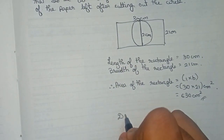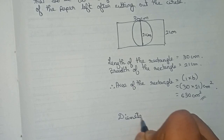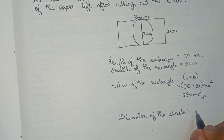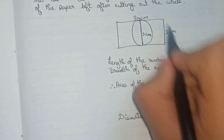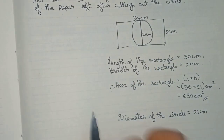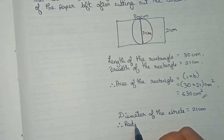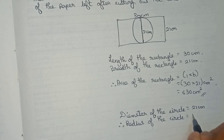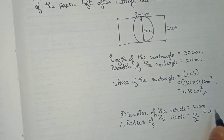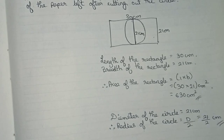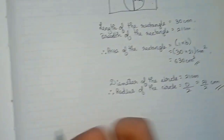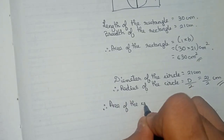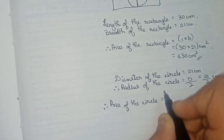Now we know that the diameter of the circle is equal to 21 centimeters, as the diameter equals the breadth of the rectangle. Therefore, we can find the radius: radius of the circle equals diameter divided by 2, which is 21 by 2 centimeters. Now we find the area of the circle: area of circle equals pi r squared.